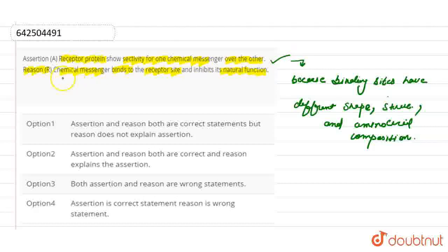And the reason here, that chemical messenger binds to the receptor site and inhibits its natural function, is wrong. Why? Because it's not the chemical messenger which binds to the receptor site. They are some drugs which bind the receptor site, which is known as antagonists, which bind the receptor site and inhibit the natural function.